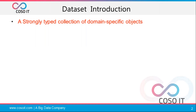So, why Dataset? It's a strongly typed collection of domain-specific objects. A domain means a table. Suppose you have two tables: department and person. Person can have name, age, address, and gender. Department can have department ID, salary, department group, and other information. These together make a domain — a specific group of objects.